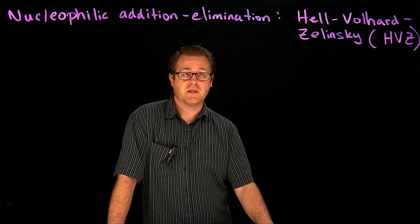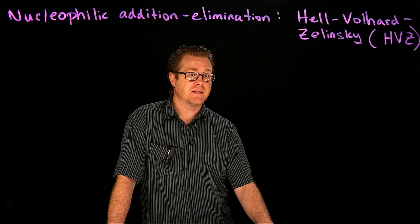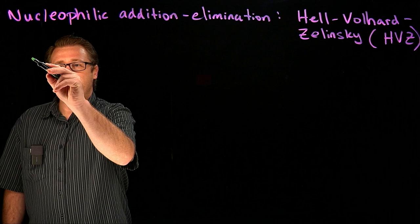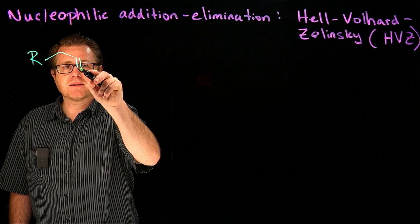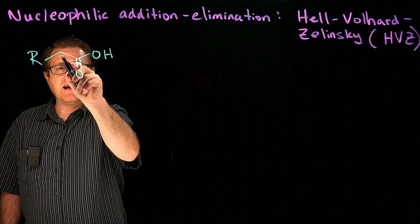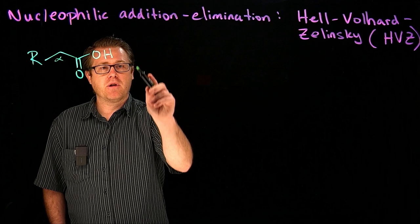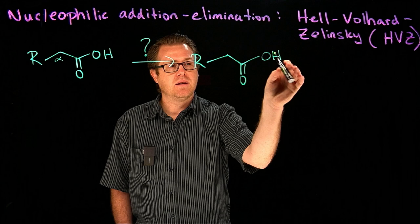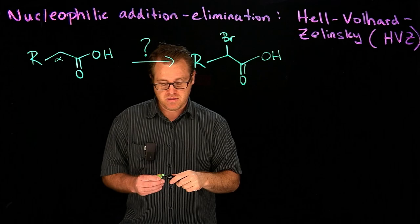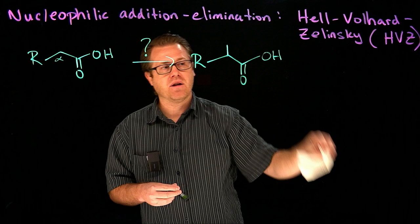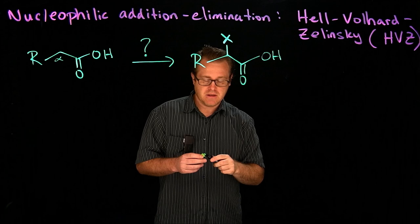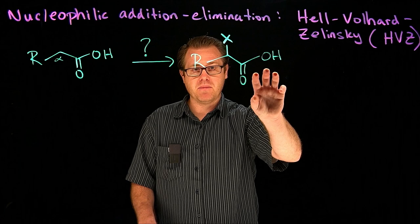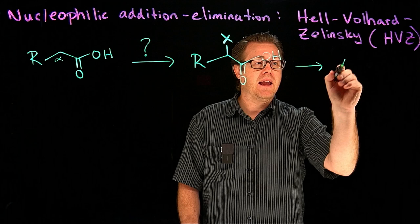Today we're discussing a named nucleophilic addition reaction called the Hell-Volhard-Zelinskii reaction. That's a mouthful, so we'll just abbreviate it HVZ. Simply put, what we're doing is taking a carboxylic acid that has an alpha carbon, and we're going to make the following transformation: we'll keep the carboxylic acid, but now we're going to put a halogen — let's just put an X here for a halogen — on the alpha carbon. This right here is a starting material to then proceed to make an amino acid.